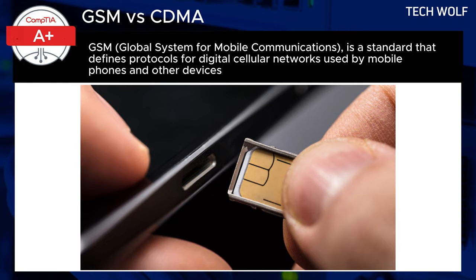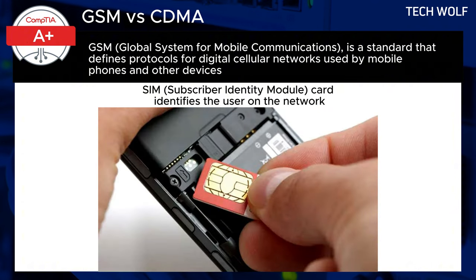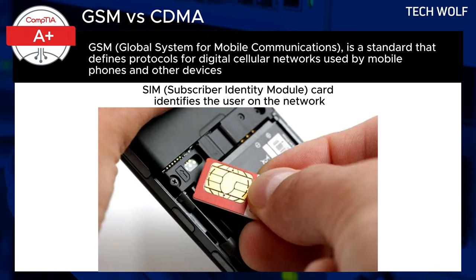A key feature of GSM networks is the use of a SIM card, or Subscriber Identity Module, which identifies the user on the network. The SIM card allows users to switch devices simply by moving the SIM card to another phone.